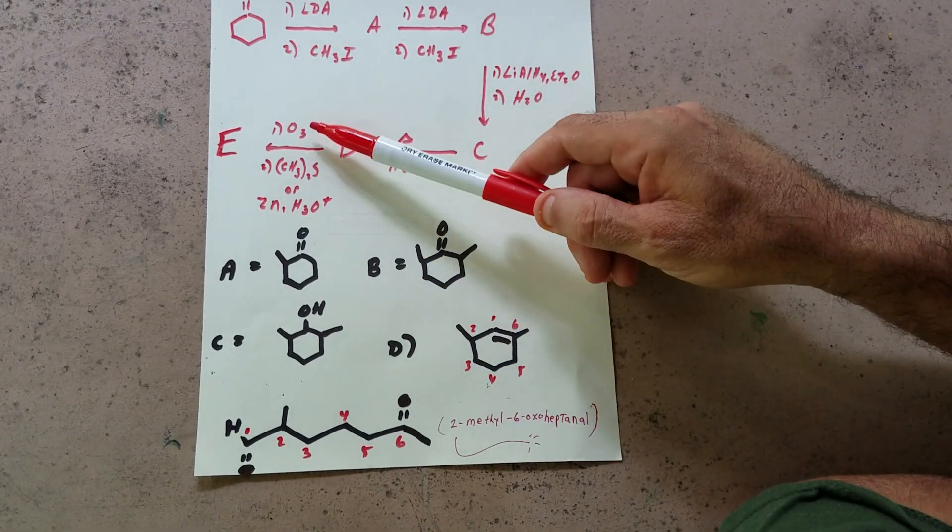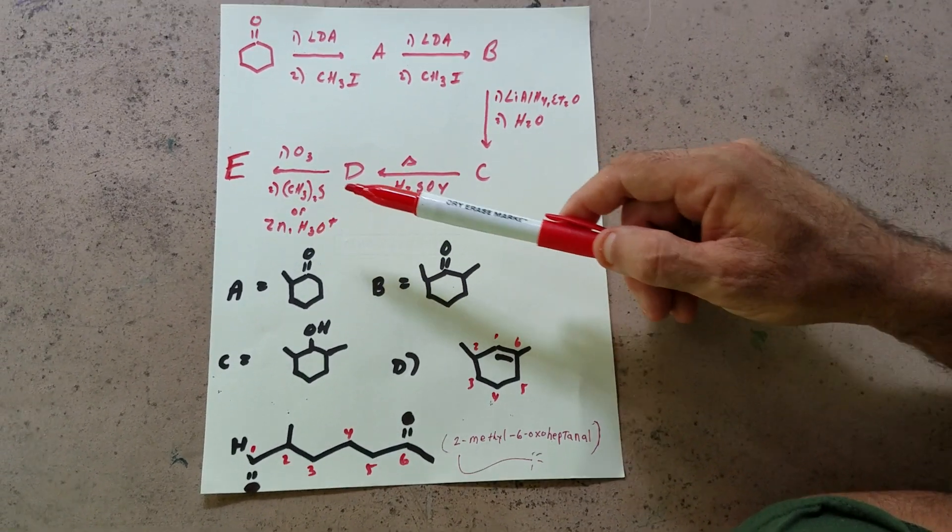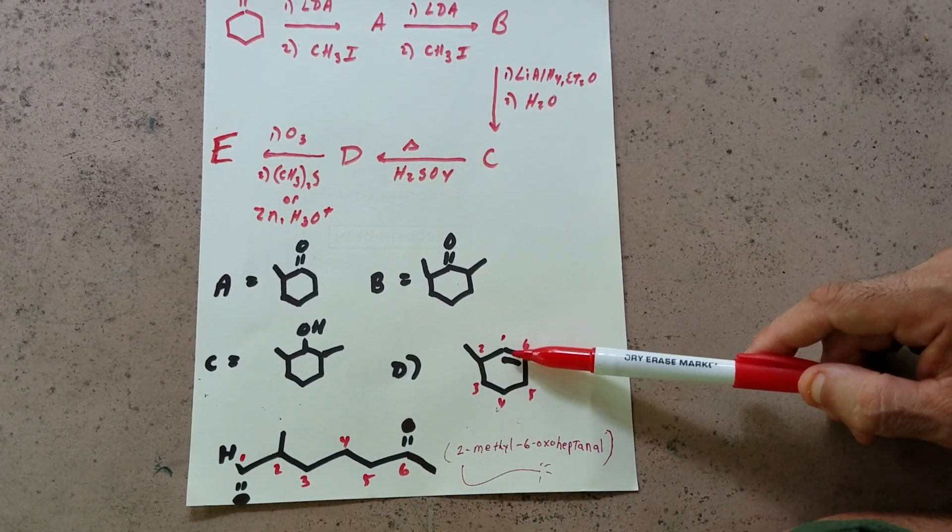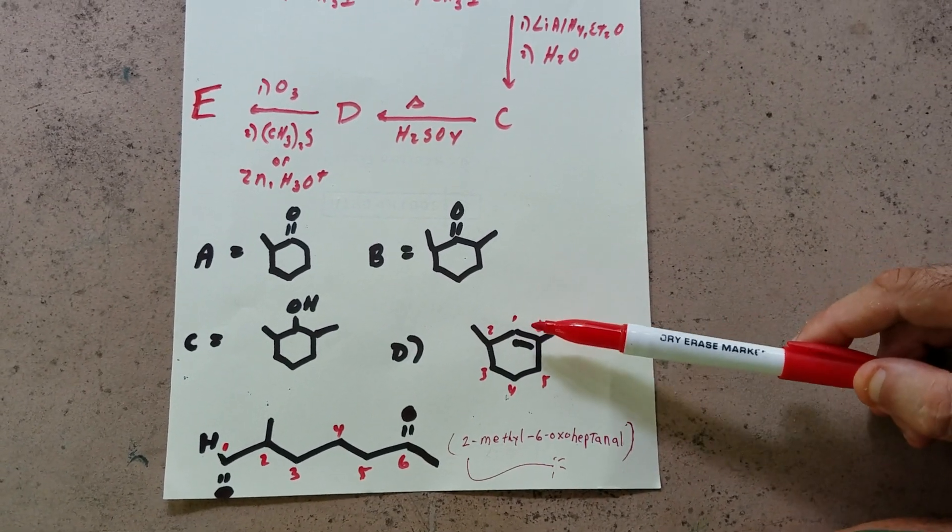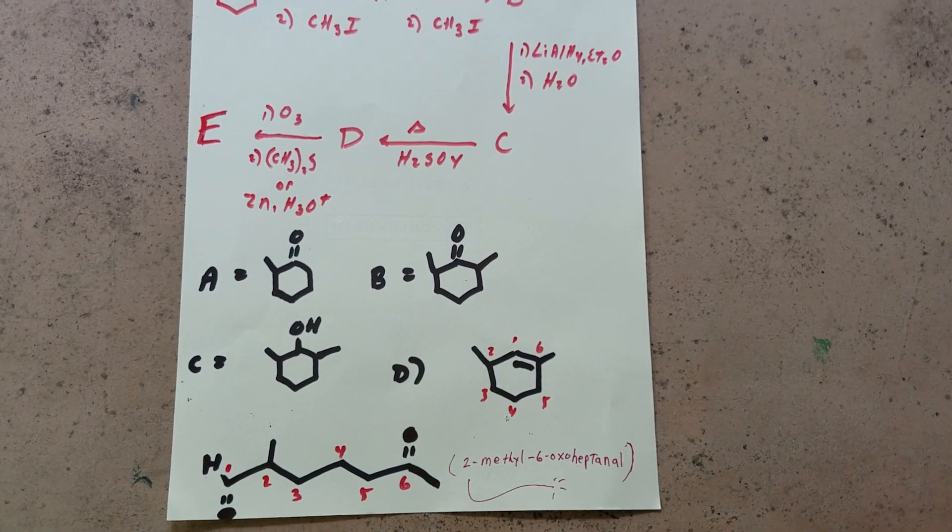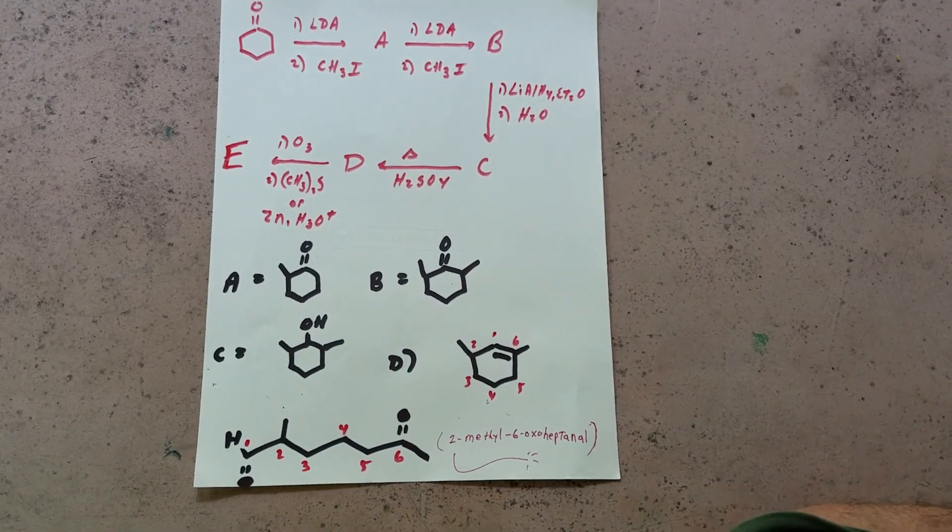And then ozone followed by dimethyl sulfide workup or zinc and acid simply breaks the bond between the one and the six where the double bond is and you put in the carbonyl group. So if you did it correctly, which you should go off to the side and try it, you should come up with this compound.